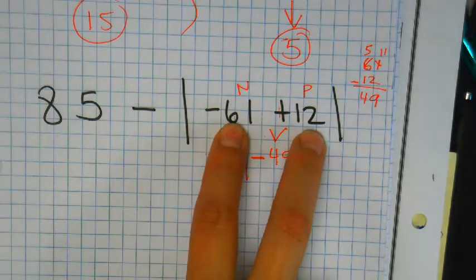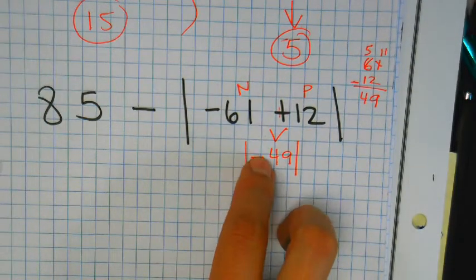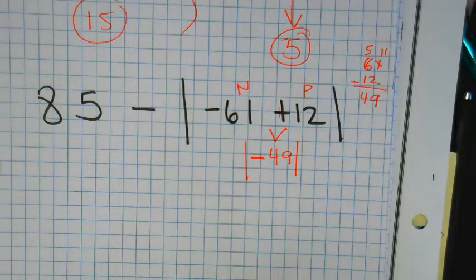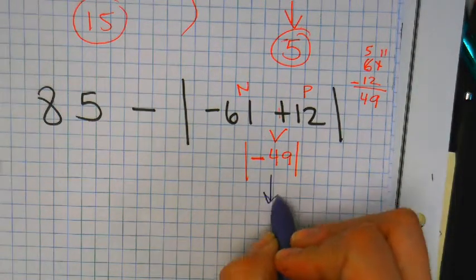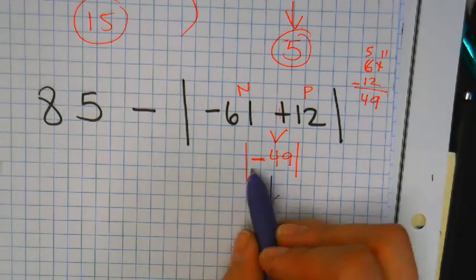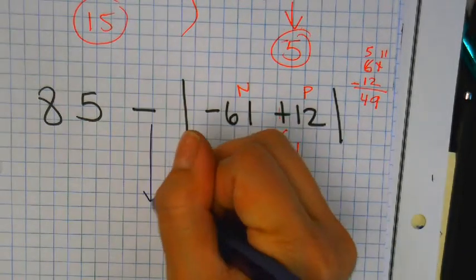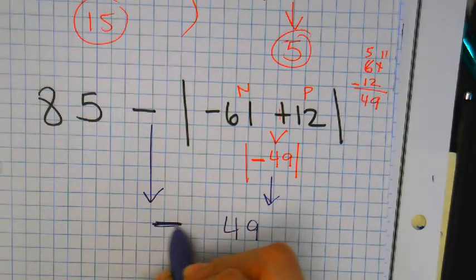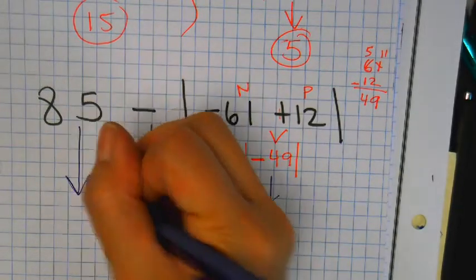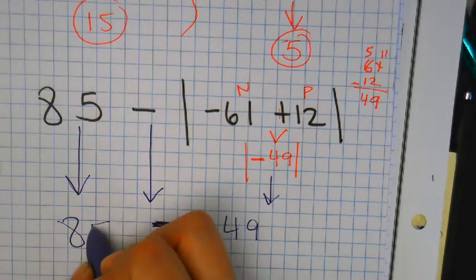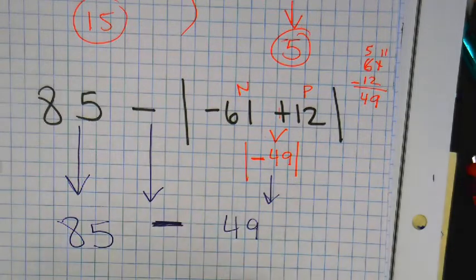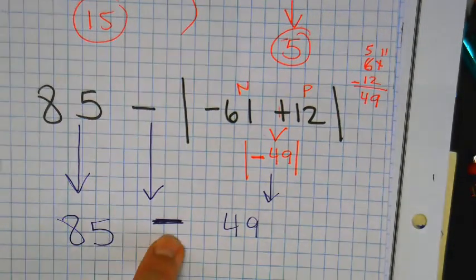You cannot take out numbers when there's two numbers. You have to simplify it down to just one number. What's the absolute value of negative forty-nine? Forty-nine. Now I get to bring down this. Then I bring down this. So I have eighty-five minus forty-nine.